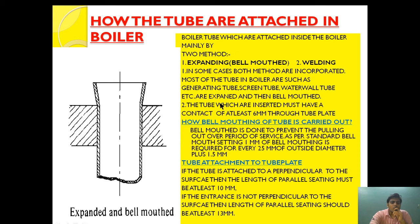These tubes which are inserted must have a contact of at least 6 mm through the tube plate, so that they have a good grip. Now, how is bell mouthing carried out? Bell mouthing is done to prevent the tube from being pulled out during the period of service.